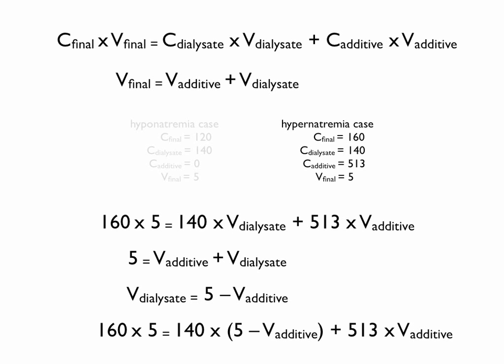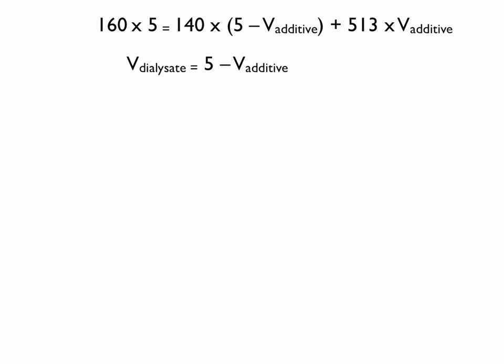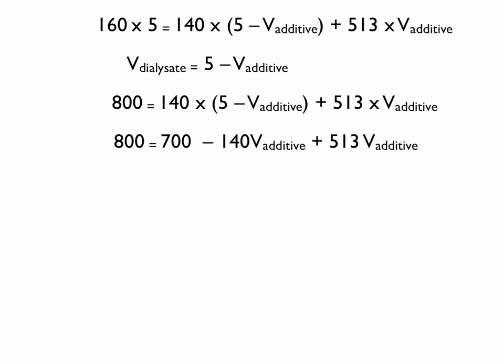We will go to a clean sheet of paper. Here we have 160 times 5 is 800, and that's the only step we did there. In the next step we started to multiply that 140 through, factoring that through, so you get 700 minus 140 V_additive plus 513 V_additive. Since this is all addition, we can just add those right through, so you get 373 times the volume of the additive.